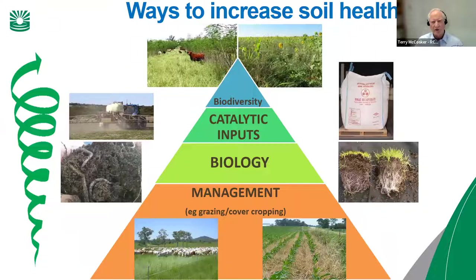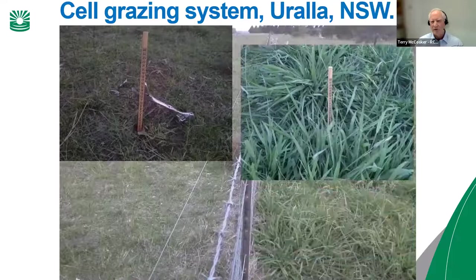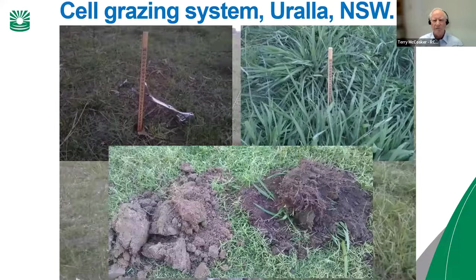Biodiversity is also critical to increasing the rate of carbon sequestration in our soil and also to soil health itself. To illustrate this within a grazing system: there's a conventionally grazed property on the left and a cell-grazed property on the right. When you look at the soils you can see a substantial difference — the property on the right is sequestering three tons of carbon per hectare per annum.